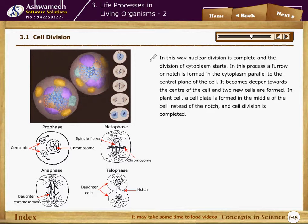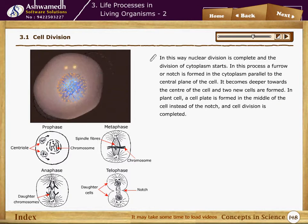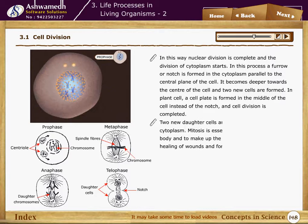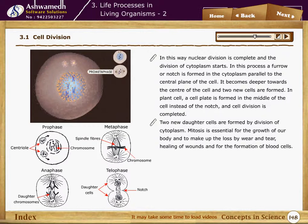The division of cytoplasm then starts. A furrow or notch is formed in the cytoplasm parallel to the central plane of the cell, deepening towards the center, forming two new cells. In a plant cell, a cell plate is formed in the middle of the cell instead of a notch, completing cell division. Two new daughter cells are formed by division of cytoplasm.